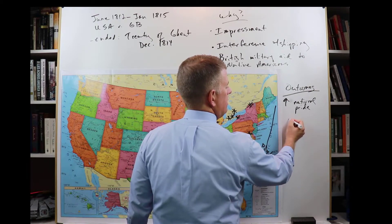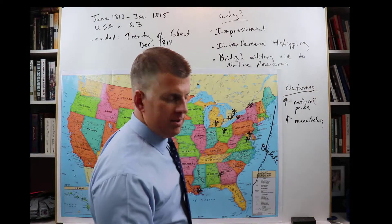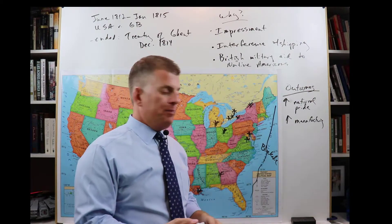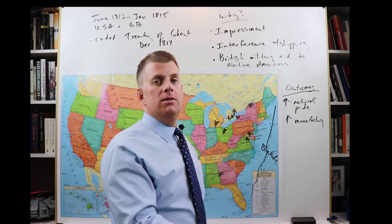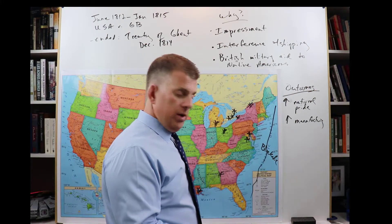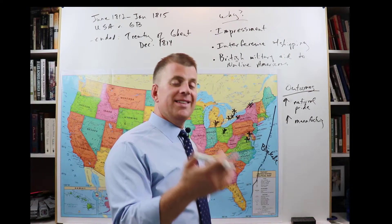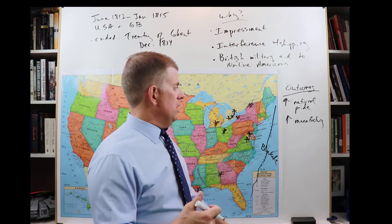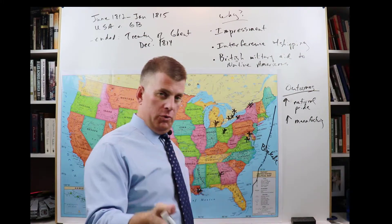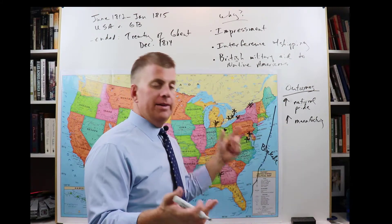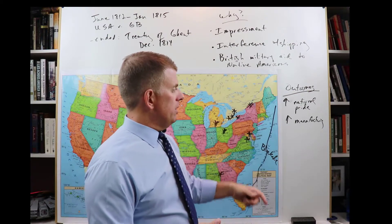There was also increased manufacturing. Why would businesses in the U.S. start to make more stuff? It's because of the blockade — they couldn't trade with other countries, they couldn't buy goods made in other countries, so they had to start making stuff themselves: shirts, rifles, all kinds of things. Manufacturing increased because they had no other choice. When we get to the Industrial Revolution, this is going to be a big factor and give the factory system here in the U.S. a jumpstart after the War of 1812.